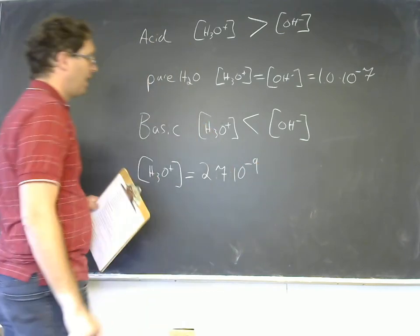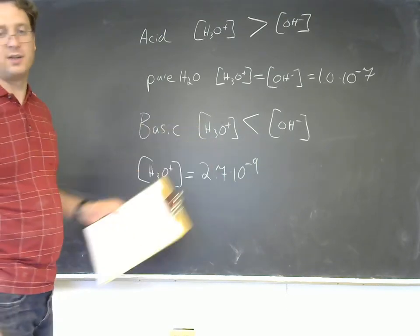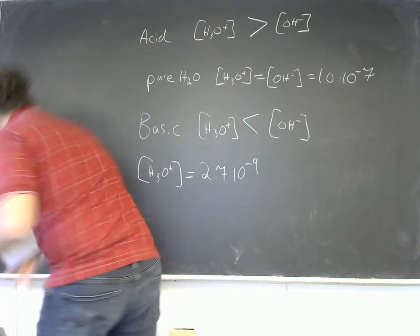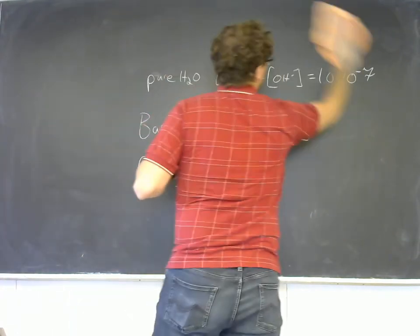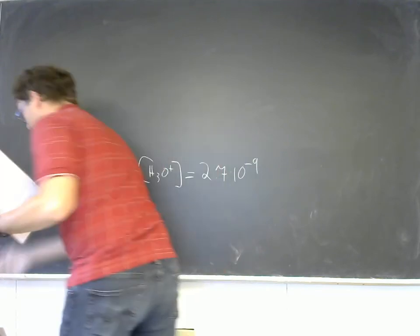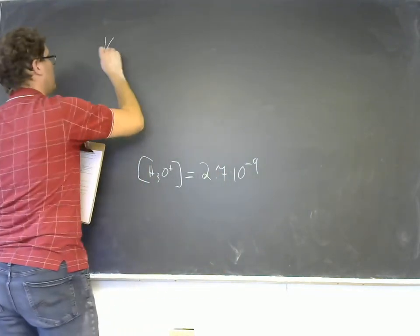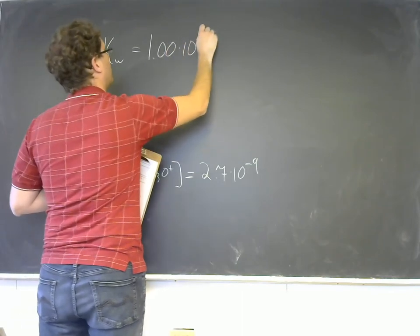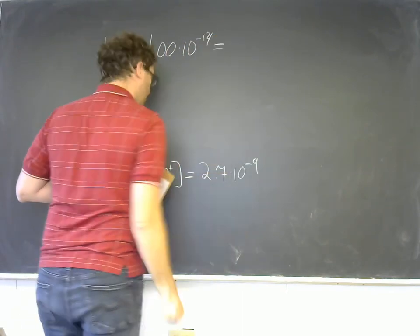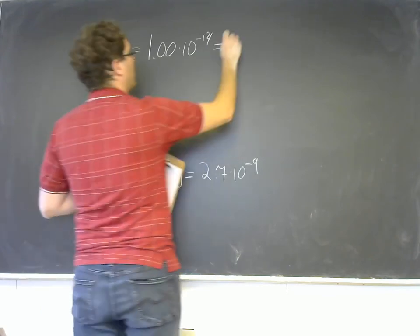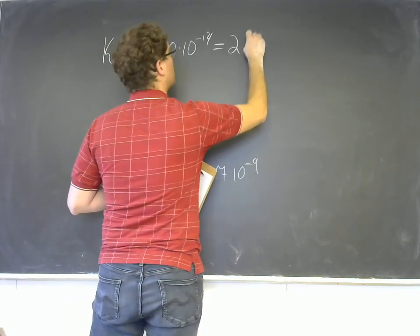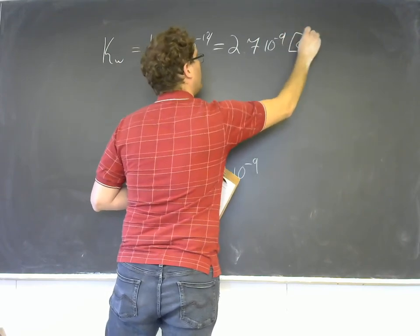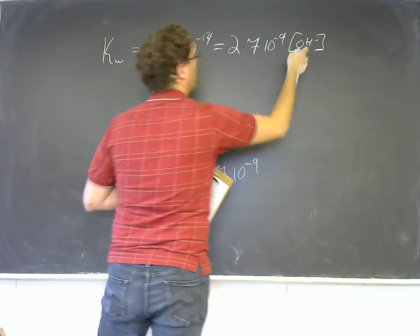So how can I find my OH minus concentration? Well, I know that, let me erase here. I know that KW, or in other words, 1.00 times 10 to the negative 14th is going to equal my H3O plus concentration, 2.7 times 10 to the negative 9th, times my OH minus concentration. And I can just solve for it.